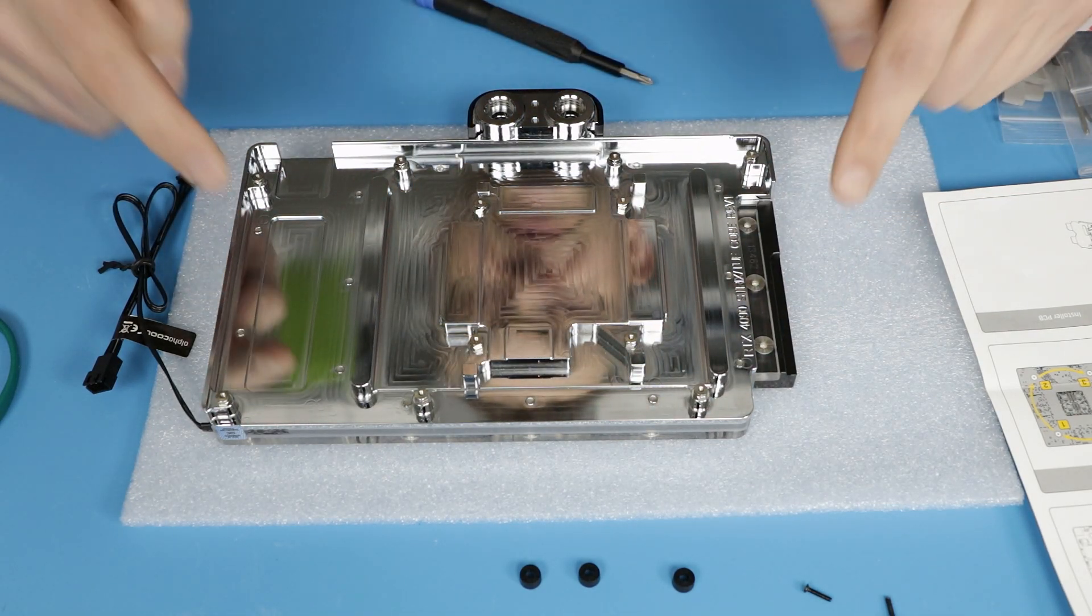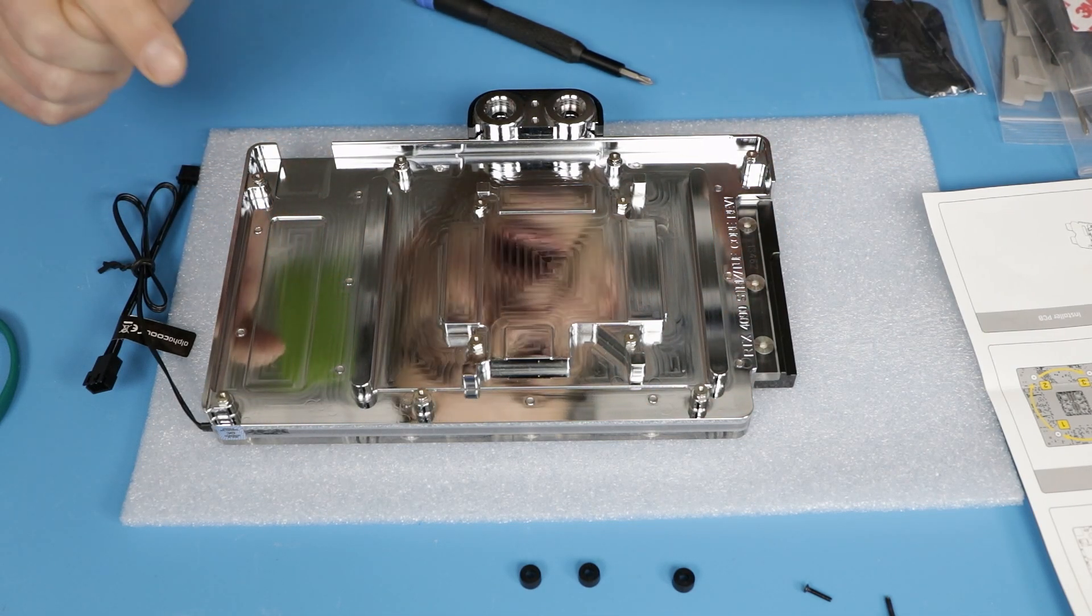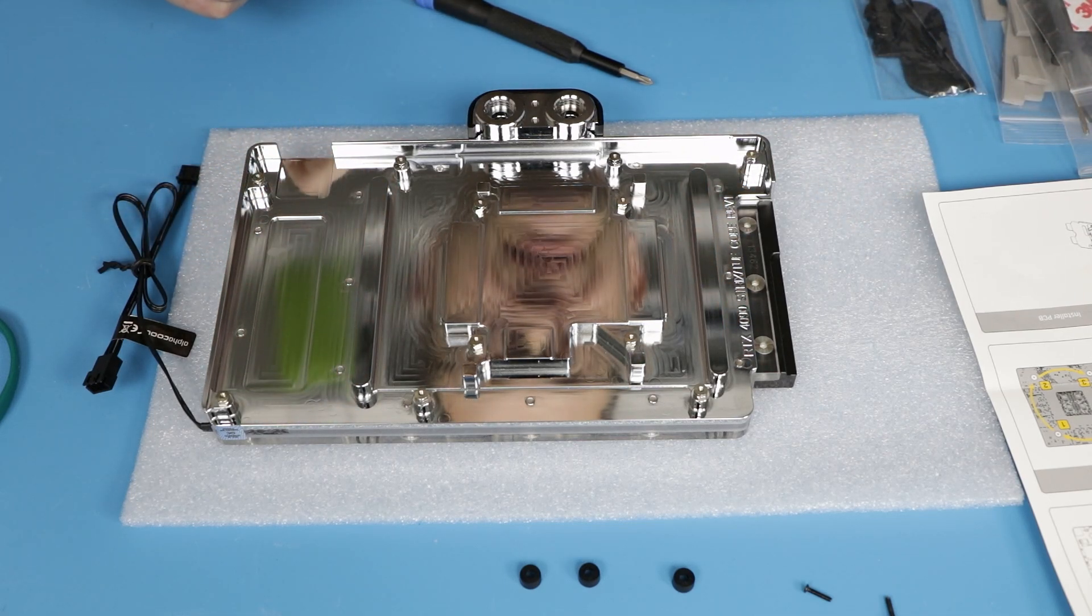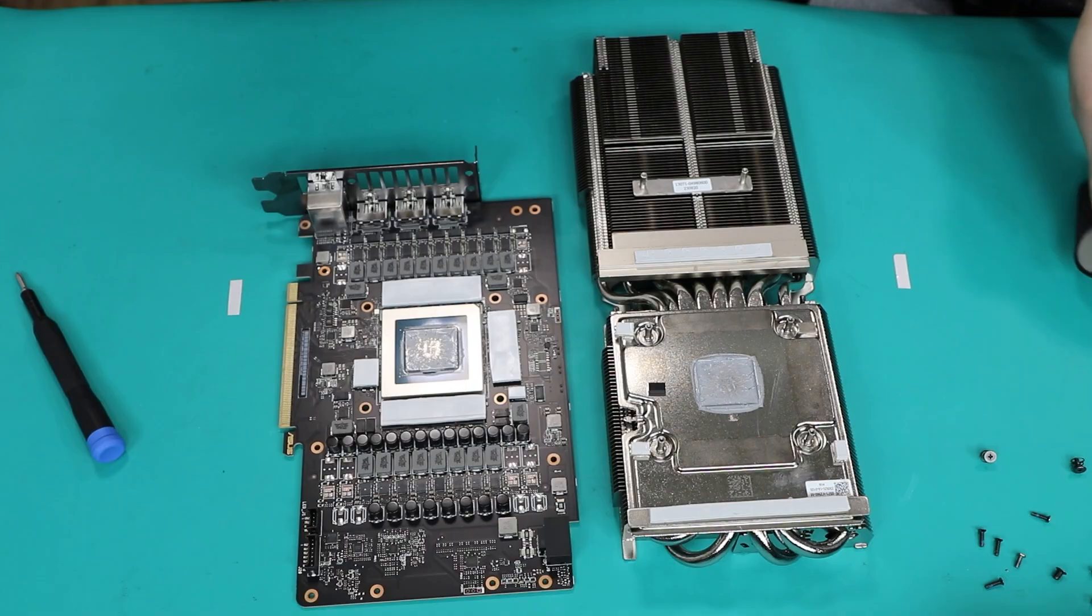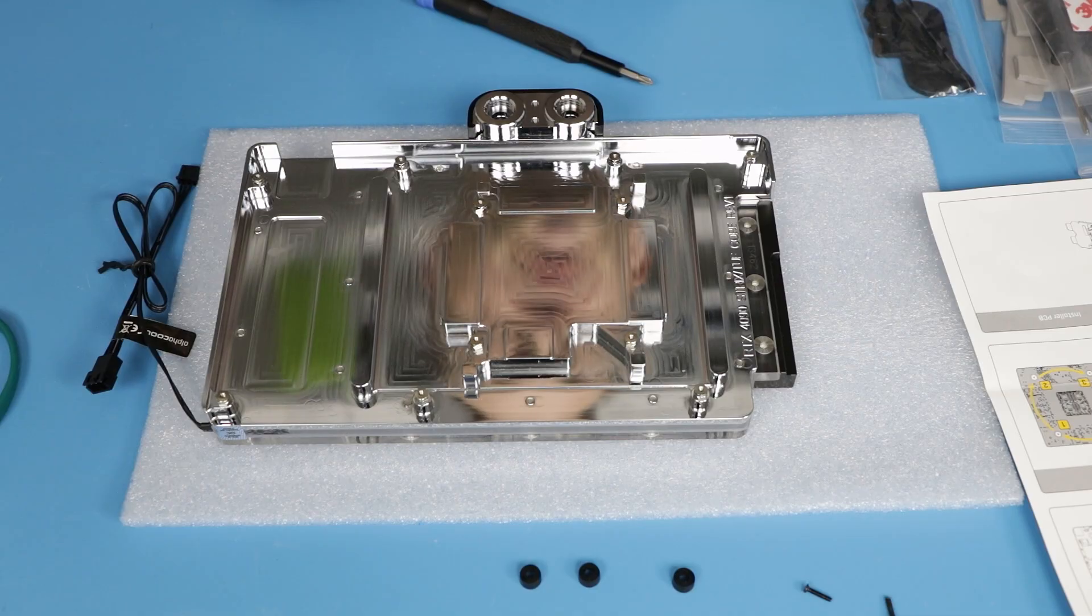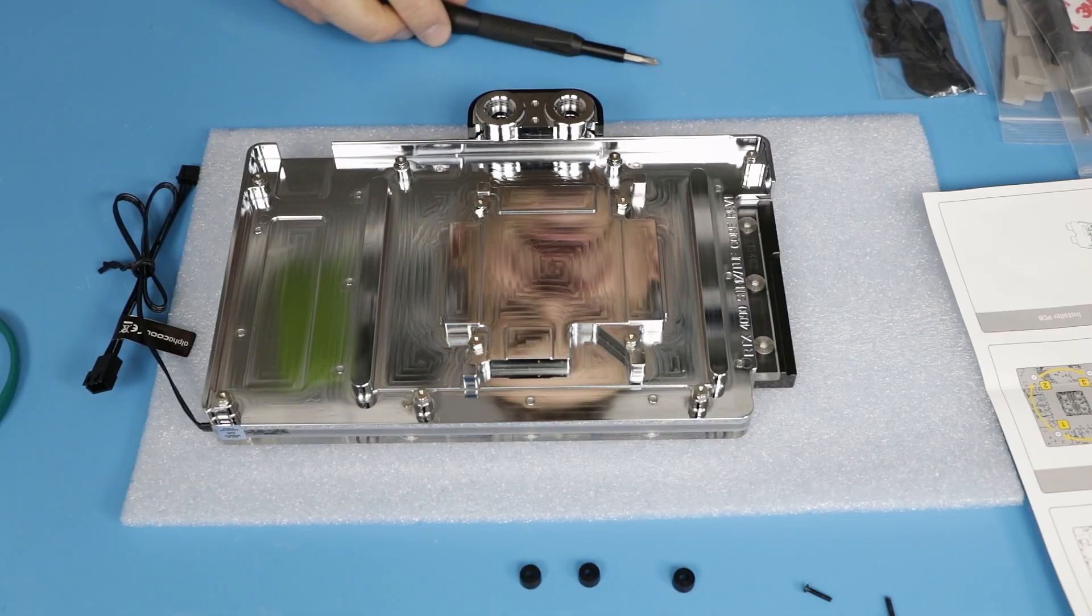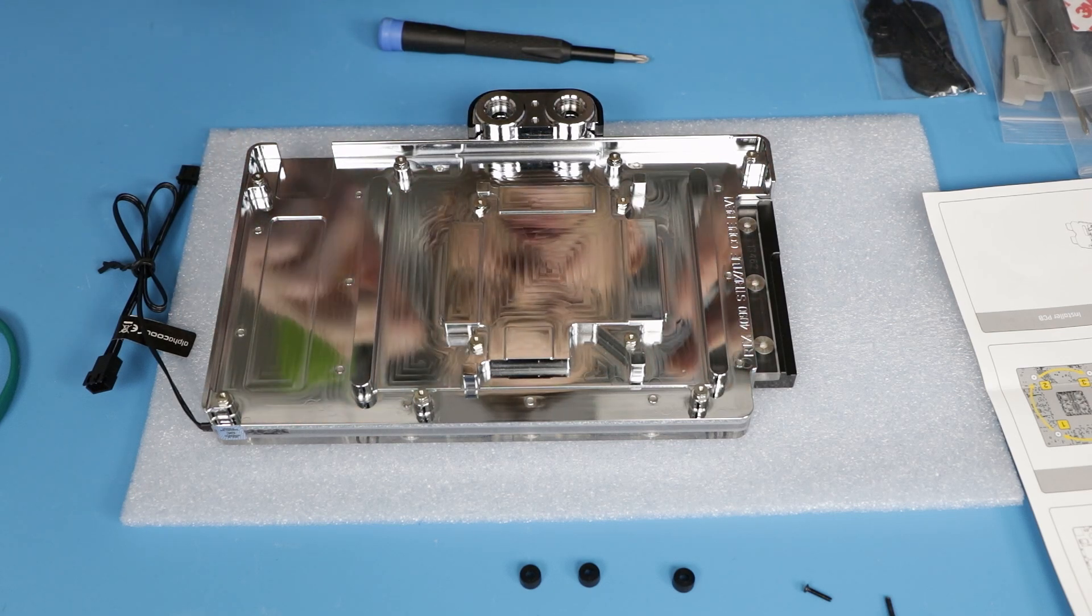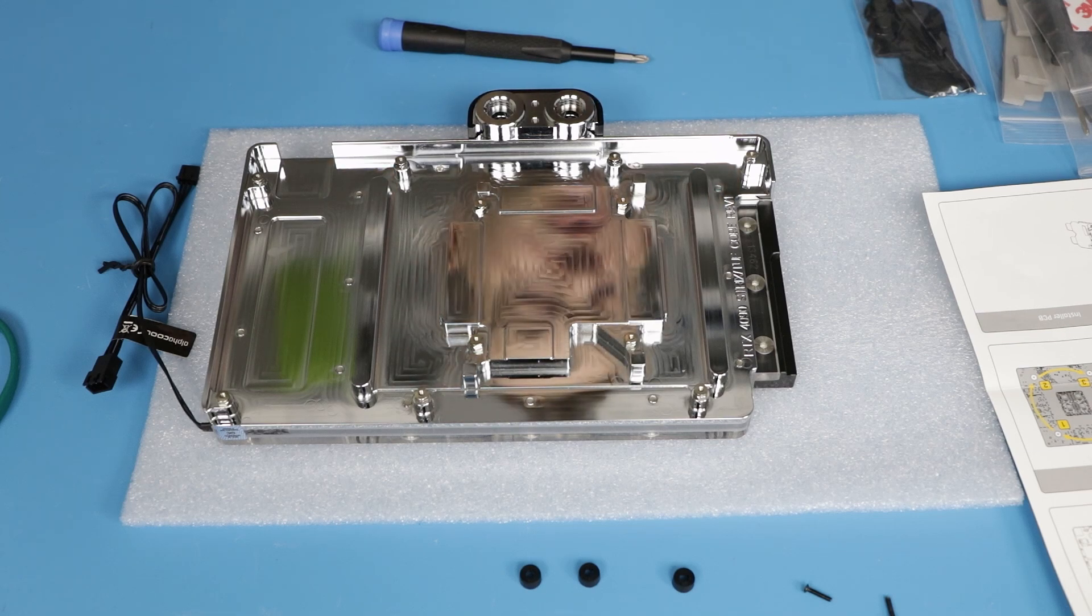Also interesting enough that the places where the thermal pads will be placed will be matched exactly the same as it was on the stock cooler air cooler, while EK put additional thermal pads on the voltage regulators. I don't know if it's just overkill or they think it helps, but it's a little bit of difference here. Other than that, basically all spots are exactly the same, so it will be very similar to the other video ahead.